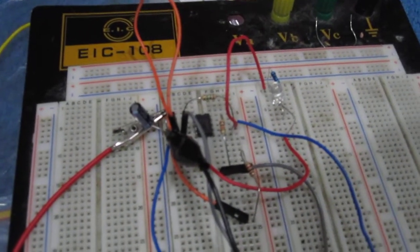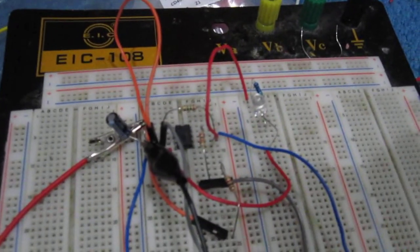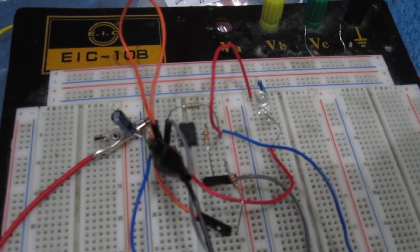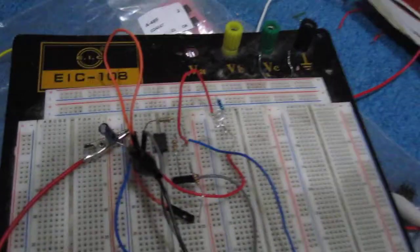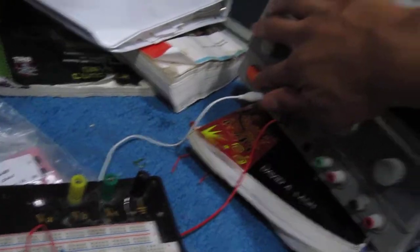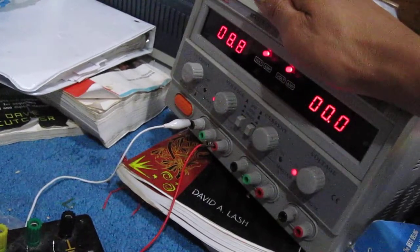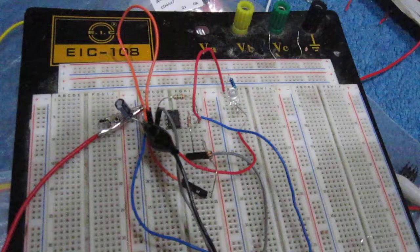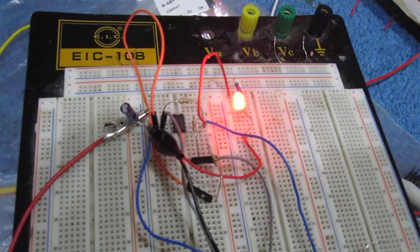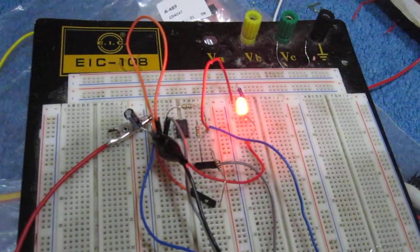Hey guys, this is an astable multivibrator circuit built using an LM741 op-amp chip. To demonstrate this circuit really fast, I'm going to turn on the power supply. I set it to about 9 volts and you can see the LED turning on and off.